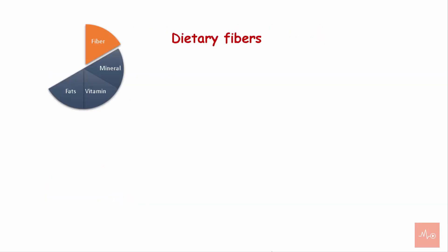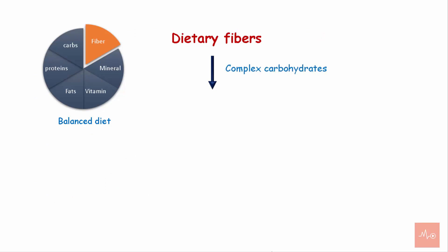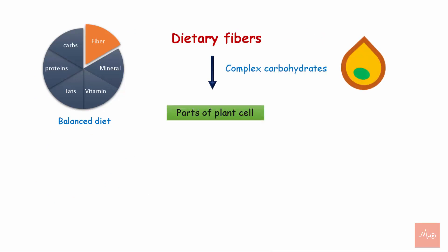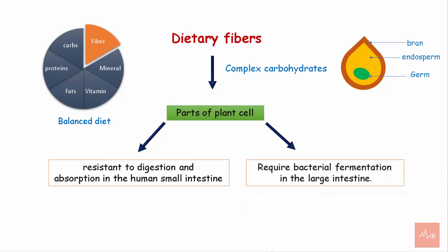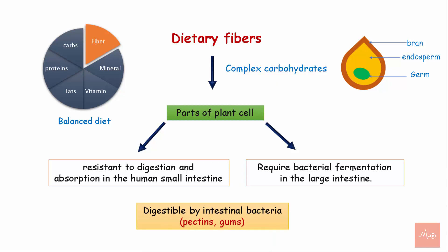Dietary fibers are an important part of the balanced diet. They are complex carbohydrates obtained from parts of the plant cell, like the bran portion of grain, which is the outer layer of a grain. They are resistant to digestion and absorption in the human small intestine and undergo bacterial fermentation in the large intestine. Some fibers like pectins and gums are digestible by the intestinal bacteria.